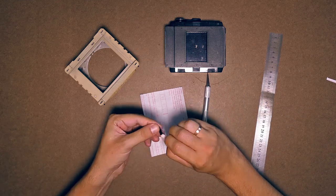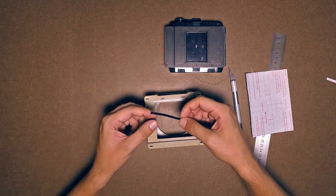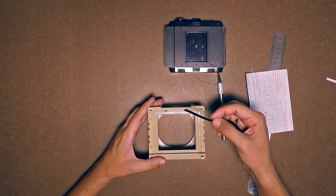Remove the paper from the foil. Stick it on the 3D printed camera buddy.